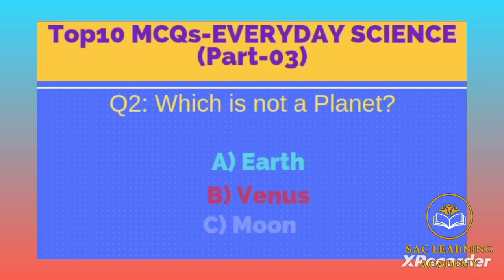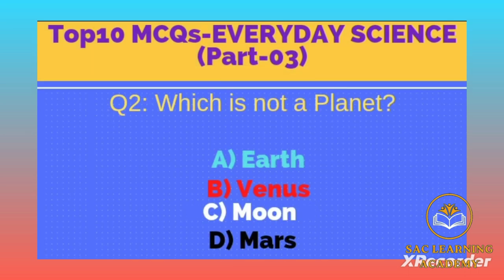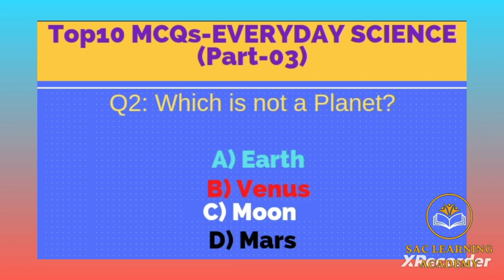Question number 2: Which is not a planet? Option A: Earth, B: Venus, C: Moon, D: Mars. Correct option is C, Moon. The Moon is Earth's sole natural satellite and nearest large celestial body. It is a spherical rocky body revolving around Earth in a slightly eccentric orbit at a mean distance of about 384,000 kilometers.